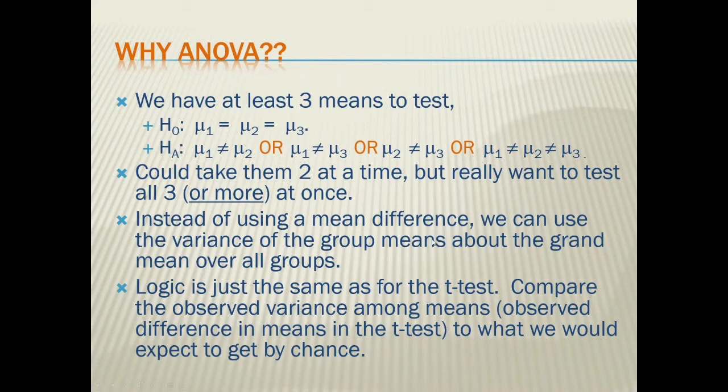Instead of using a mean difference, we can use the variance of the group means about the grand mean over all of the groups. So the logic is just the same as for the t-test. We're looking at the observed variance among means, the observed difference in means in the t-test, to what we would expect to get by chance. It's just that, again, we're going to have more than two groups.